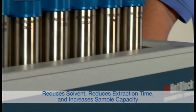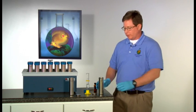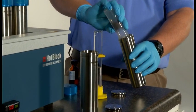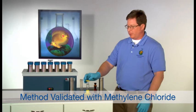The first step is to weigh 10 to 30 grams of sample into the soil extraction cell. Next, add 30 mils of the appropriate solvent.